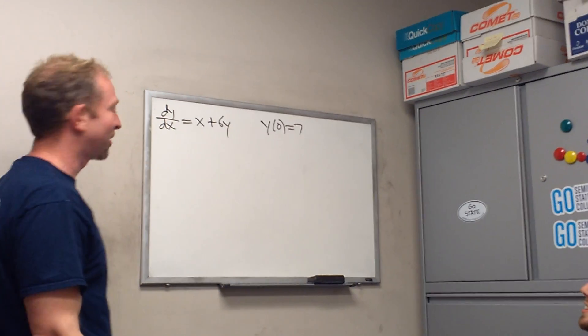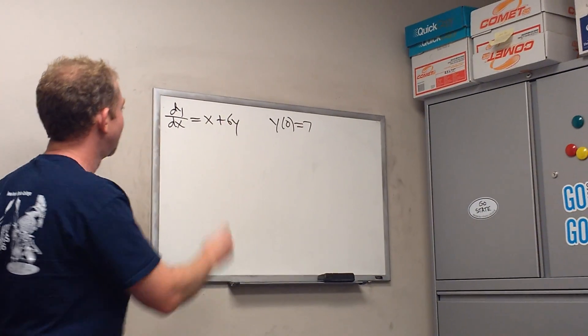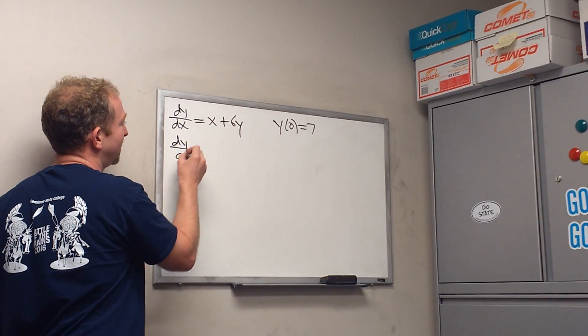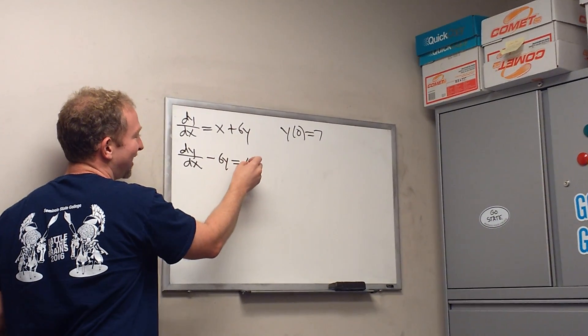All right, so I guess this is linear, right? So what do we have to do first? We have to put it in standard form. So we subtract the 6y. dy/dx minus 6y equals x.